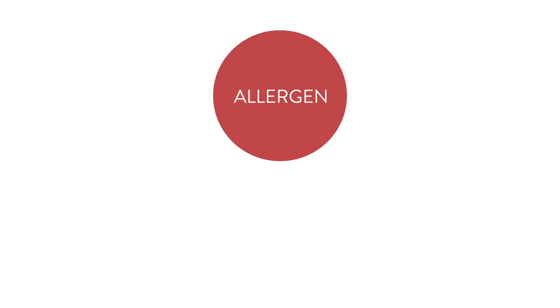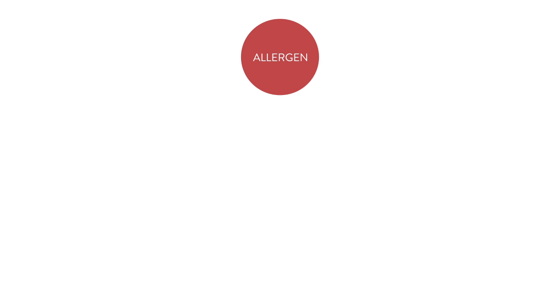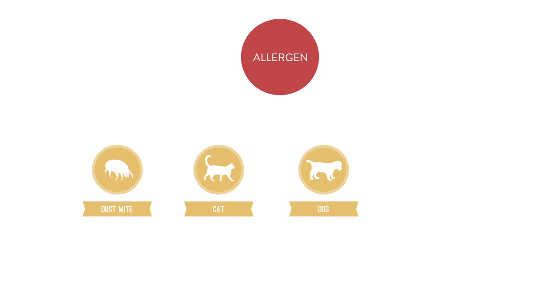A few examples to note are things like dust mites, cats, dogs, trees — you name it — that can cause your immune system to react in a sort of not-so-helpful way.